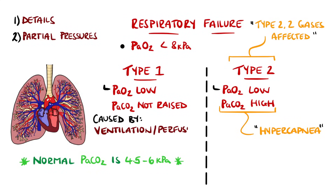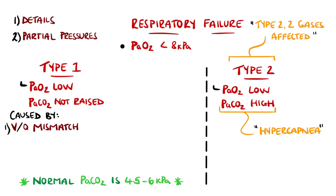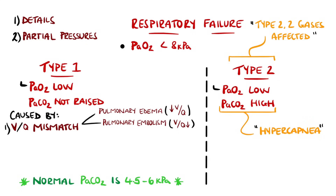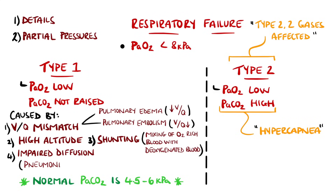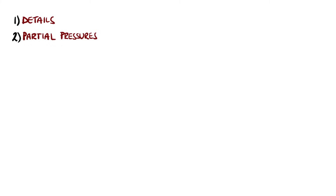Type 1 is mostly caused by poor oxygenation of the blood, most commonly due to ventilation-perfusion mismatch. For example, pulmonary oedema, where ventilation is reduced and perfusion is normal, or pulmonary embolism, where ventilation is normal but perfusion is reduced. Other causes include high altitude, shunting, and diffusion problems where oxygen cannot diffuse into the blood properly. Type 2 respiratory failure is present when the PCO2 is above 6 kilopascals, which occurs as a result of reduced ventilation and therefore less exhalation of carbon dioxide from the lungs. We'll come back to this as it is closely linked to the acid-base portion.